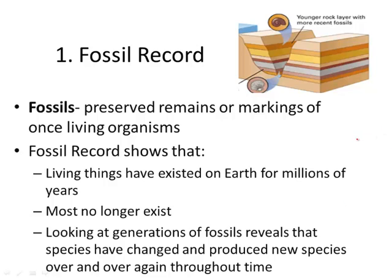Looking at the fossil record, fossils are preserved remains or markings of once-living organisms. We see many layers of rock over time with fossils in between — the layers on the bottom are the oldest and the top is the youngest. This shows that living things have existed on Earth for millions of years, that some things no longer exist, and we can see how species have changed over time and produced new species.